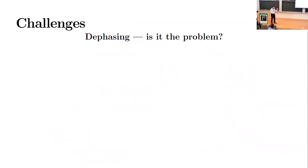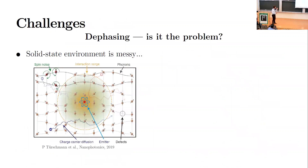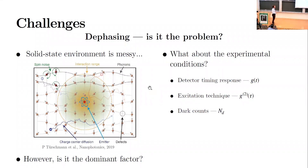Some challenges faced by these systems relate to the complicated solid-state environment: other atoms in the lattice can contribute spin noise, which is bad when we care about angular momentum of electrons in the quantum dot, and there are also free charges and phonons. Our sources were peaking at a concurrence of 0.77, and we asked whether this was due to dephasing mechanisms or whether we needed to look at experimental conditions used to measure the light. The three main factors we considered were the detector timing response, the excitation technique relating to multi-photon emission, and the dark count rate.